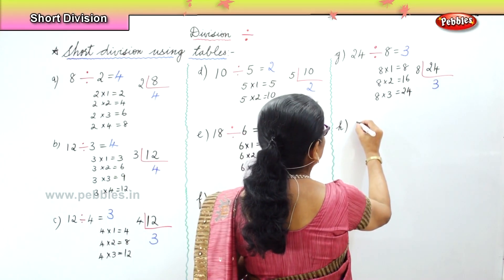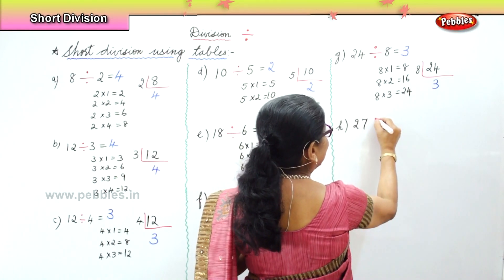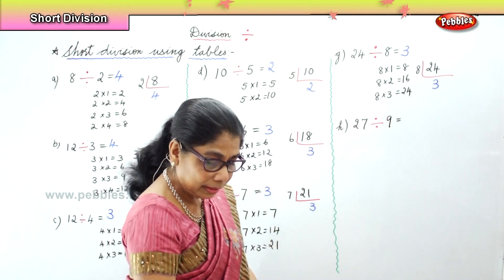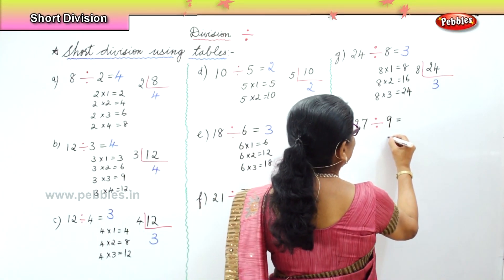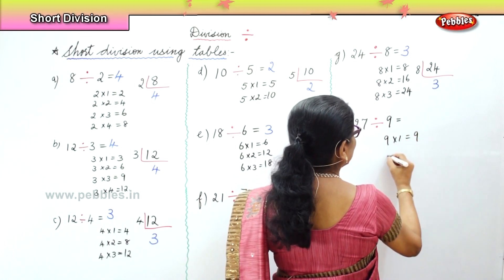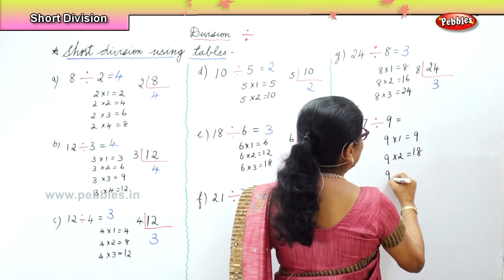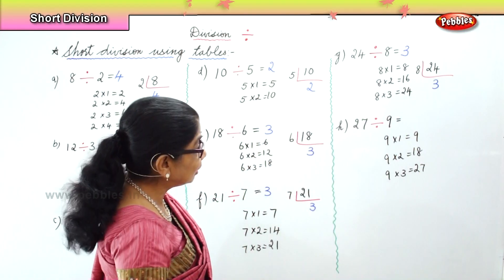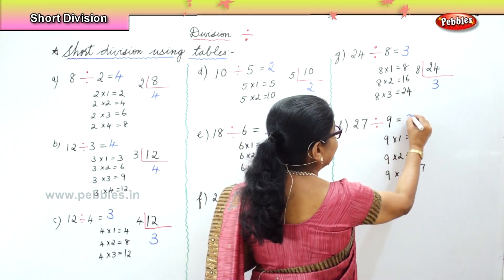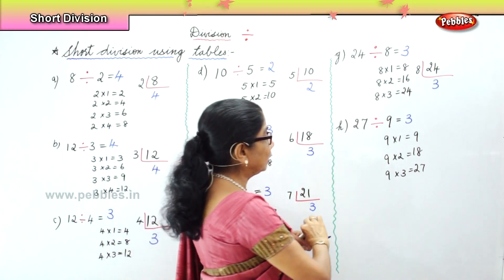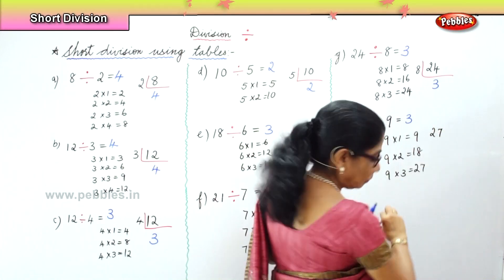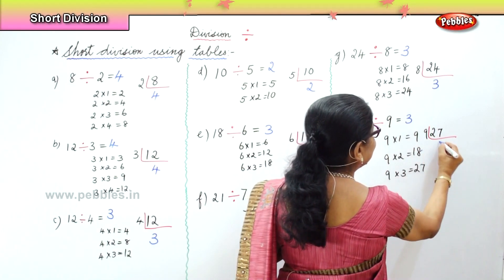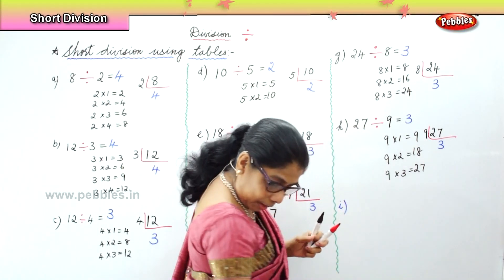Next sum: twenty-seven divided by nine. Let's look at the nine times table: nine ones are nine, nine twos are eighteen, nine threes are twenty-seven. So nine goes into twenty-seven three times — the answer is three. In the short method, nine goes into twenty-seven three times.